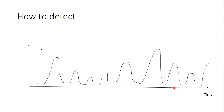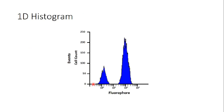At the end I get data like this: when the cell is expressing the protein I get a high peak, and when the cell is not expressing the protein I get a small peak. The computer gives me a one-dimensional histogram showing cell count — or events passing through the laser beam — on one axis and the fluorophore signal on the other. Cells giving a high fluorescence signal are expressing the protein of interest, and cells giving a low signal are not expressing the protein.